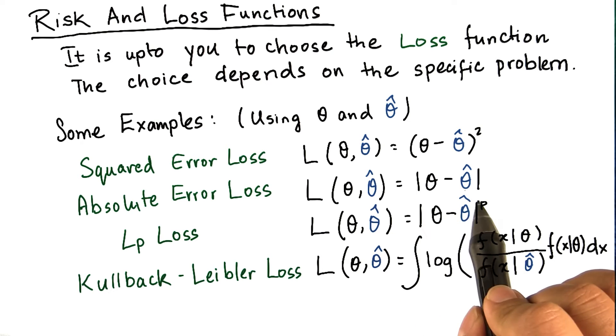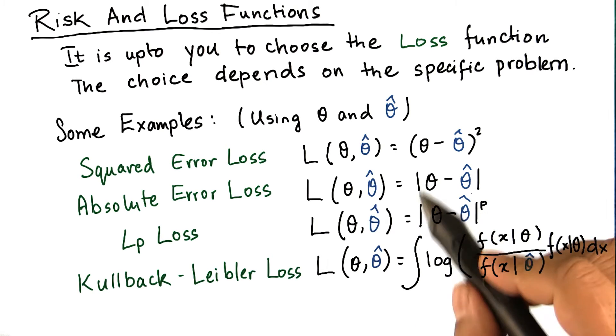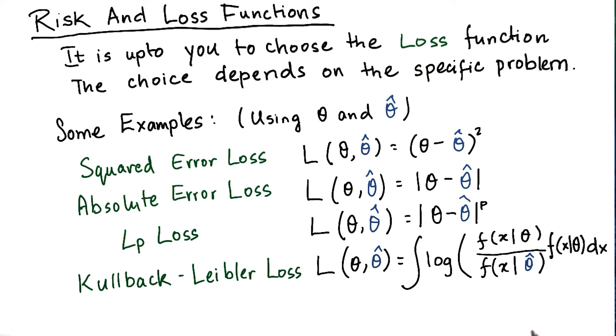In this case, you take the difference between theta and theta hat and the absolute value of that difference. An LP loss is essentially the absolute error loss raised to the power p.